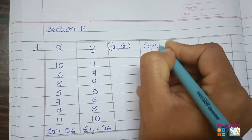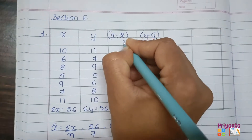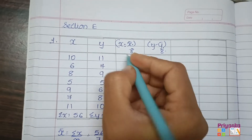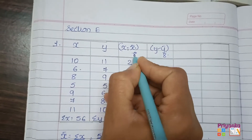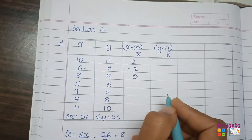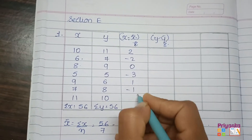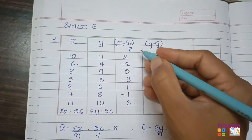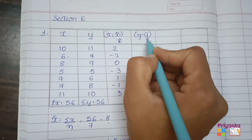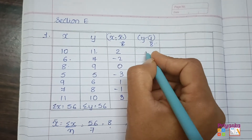The x̄ and ȳ we found are both 8. So for x − x̄: 10 − 8 = 2, 6 − 8 = −2, 8 − 8 = 0, and so on. Similarly for y − ȳ: 11 − 8 = 3, 7 − 8 = −1, and continue with the remaining values.